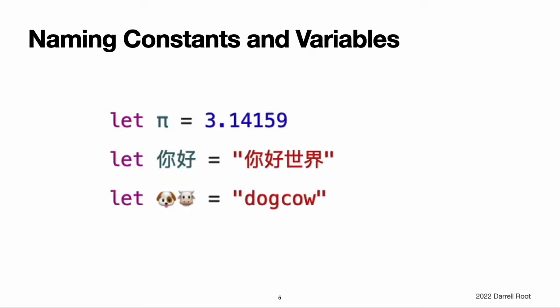Naming constants and variables. Constants and variable names can contain almost any character, including Unicode characters. Constant and variable names cannot contain whitespace characters, mathematical symbols, arrows, private use Unicode scalar values, or line and box drawing characters. Nor can they begin with a number, although numbers may be included elsewhere within the name. Once you have declared a constant or variable of a certain type, you cannot declare it again with the same name or change it to store values of a different type. Nor can you change a constant into a variable or a variable into a constant. If you need to give a constant or variable the same name as a reserved Swift keyword, surround the keyword with backticks when using it as a name. However, avoid using keywords as names unless you have absolutely no choice.